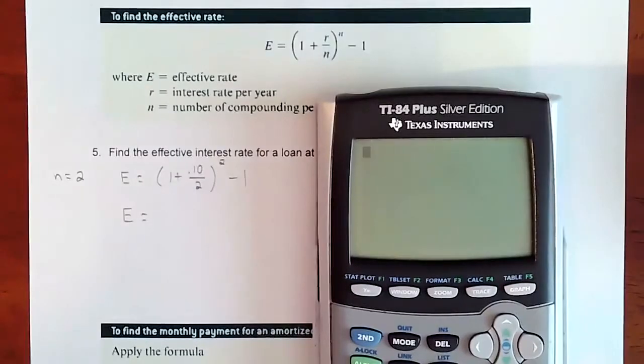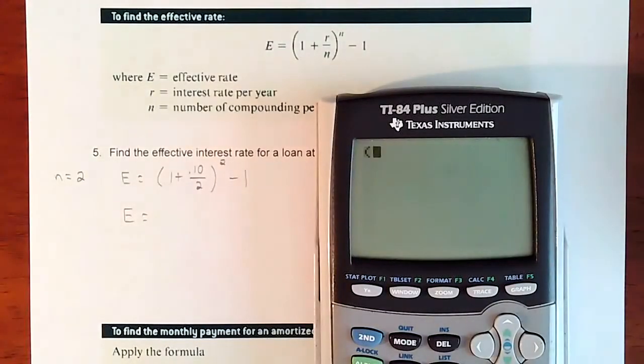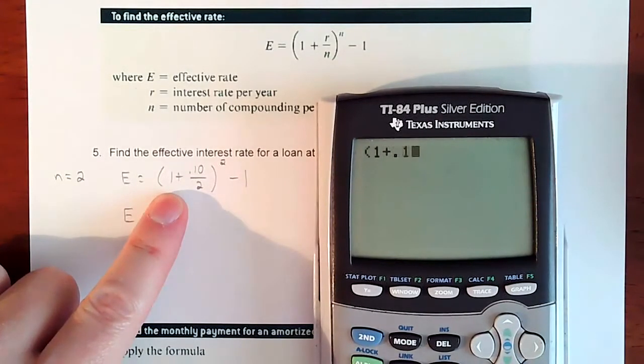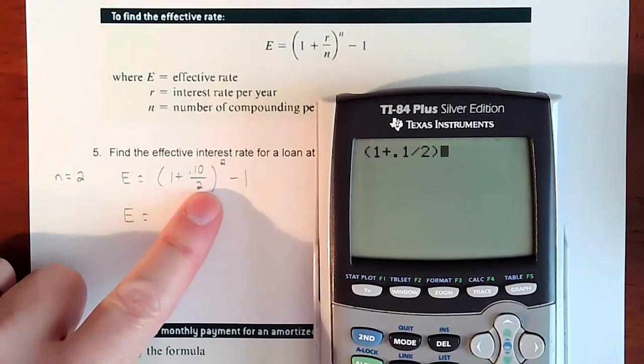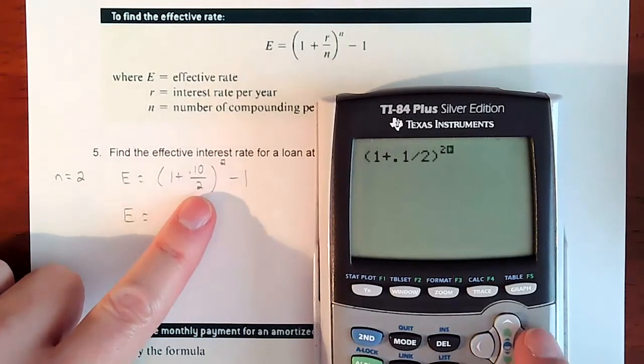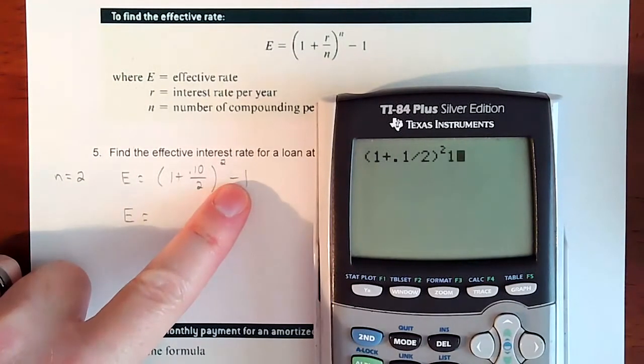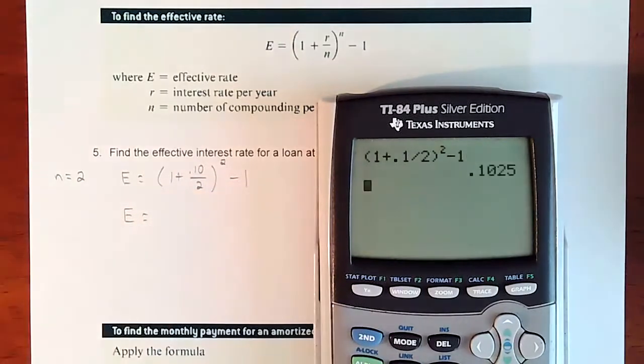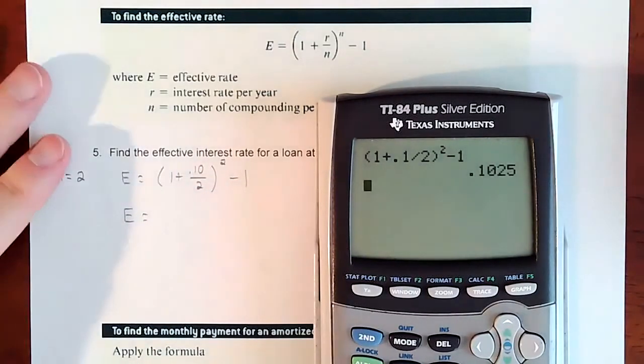We are going to start with parentheses, and then we're going to take one plus 0.1 divided by two, and then we'll raise it to the second power, and then get off of the exponent minus one.